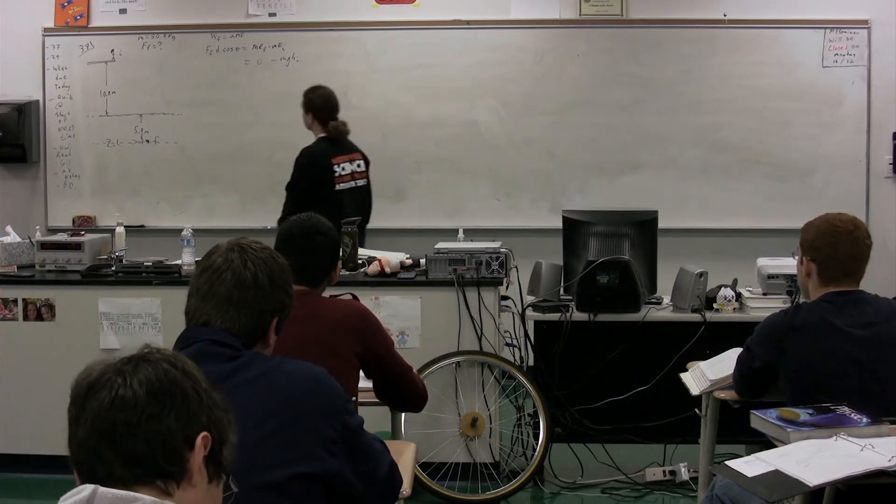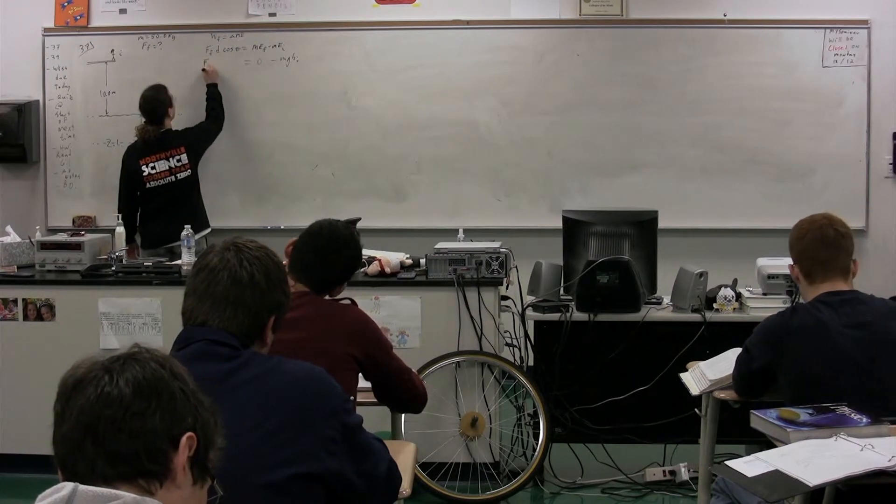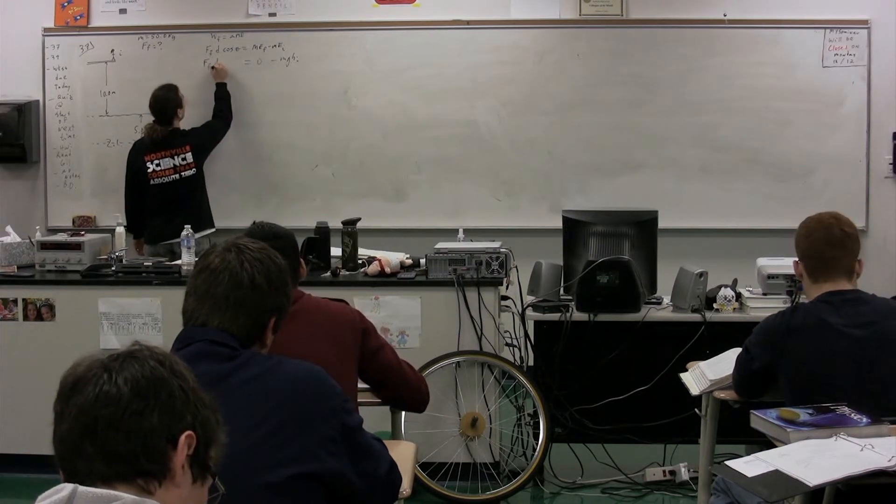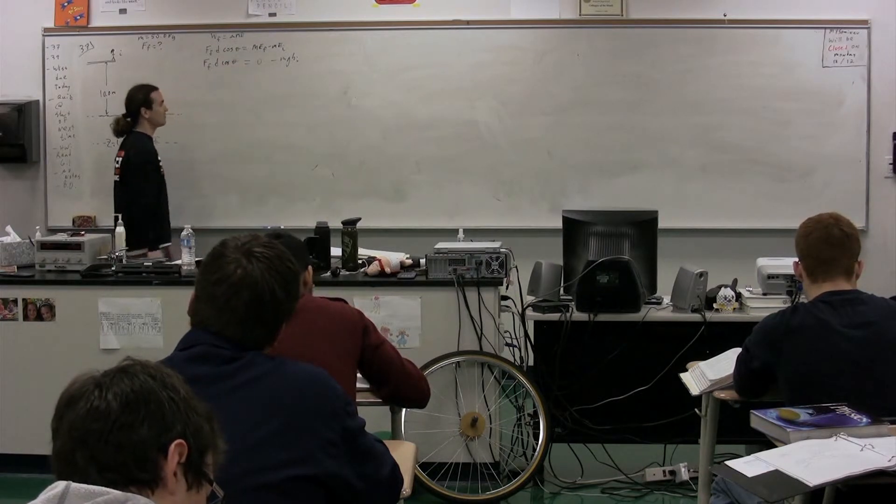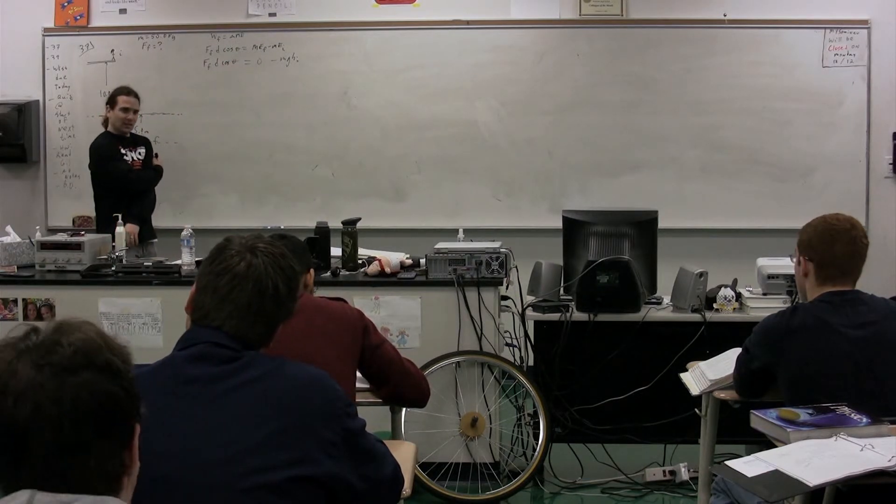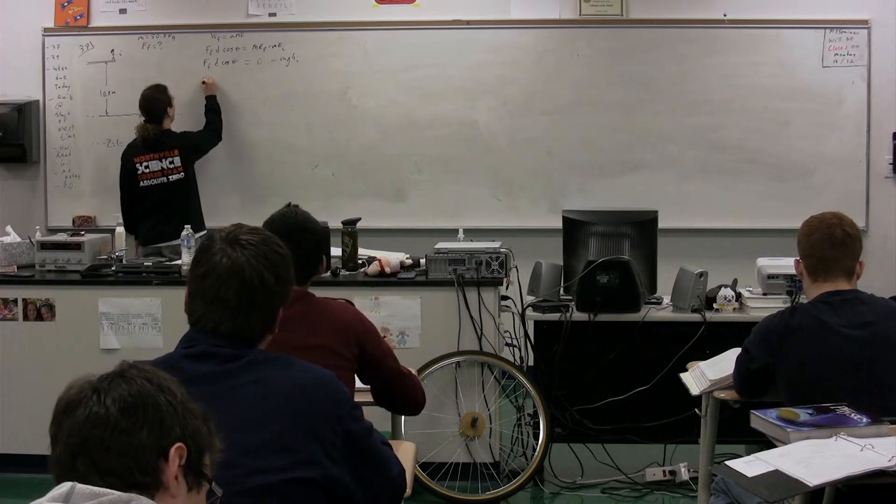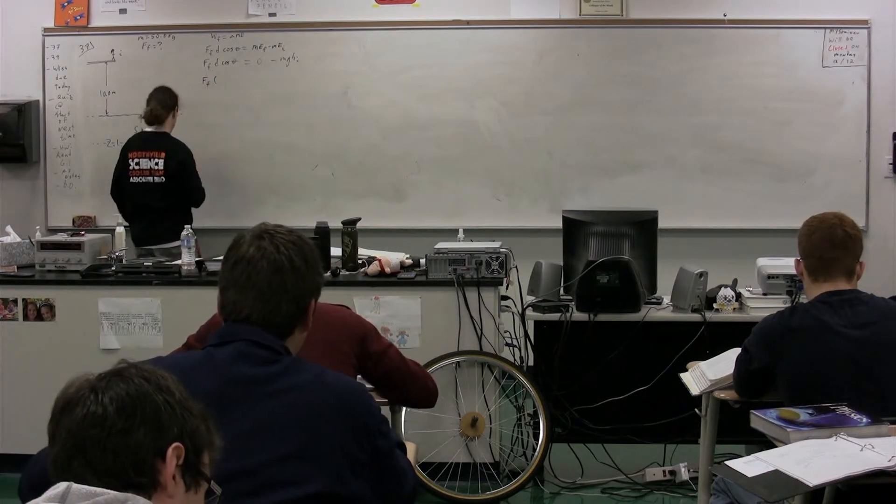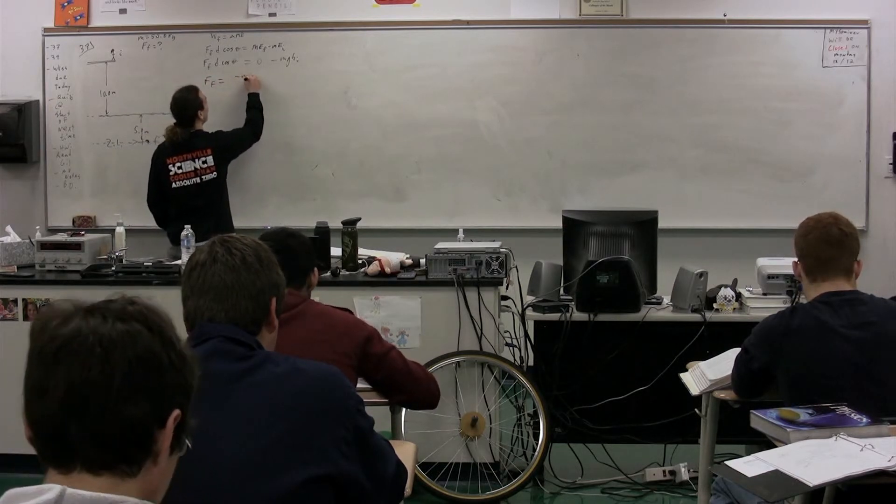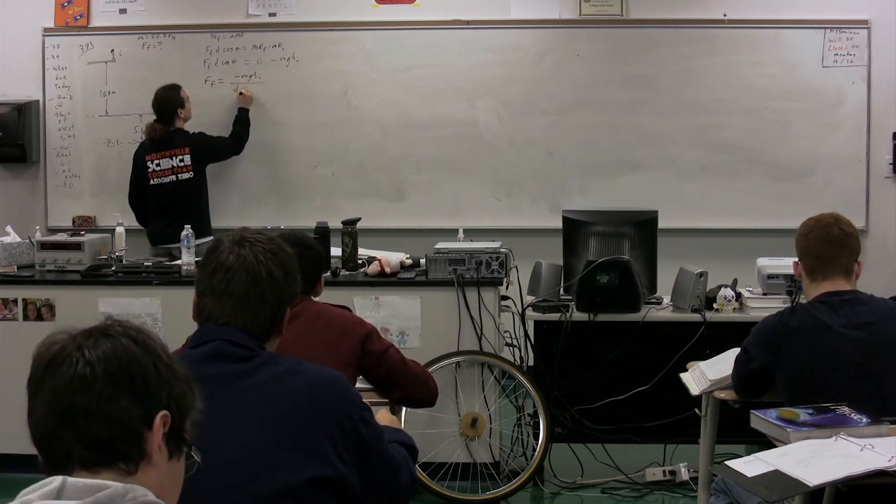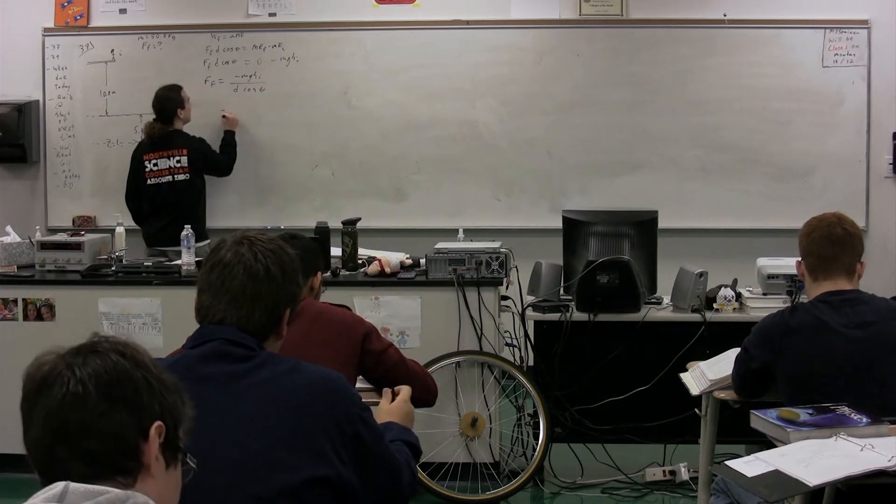On the left-hand side, we're solving for the force of friction. D, we know, and we also know the cosine of the angle. So we actually have everything here. Give me all the numbers. The force of friction equals, actually, let's do this first. The force of friction, we'll solve it with letters, and then I'll call on you, negative mgh initial divided by d cosine theta.